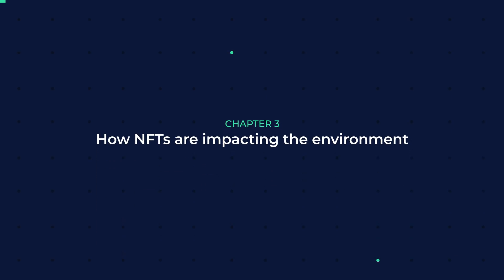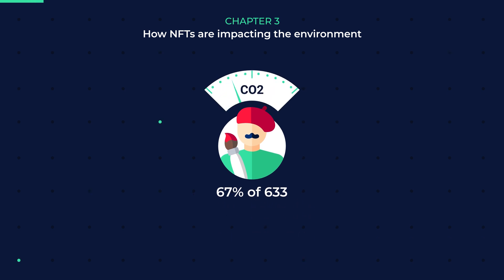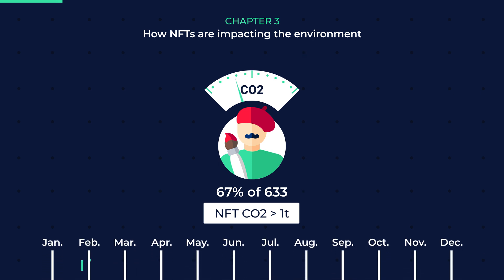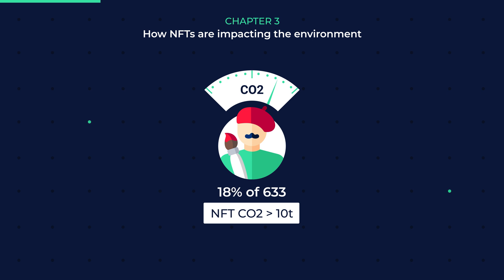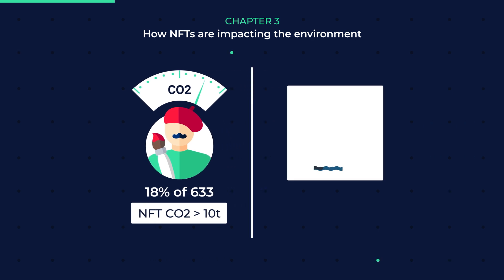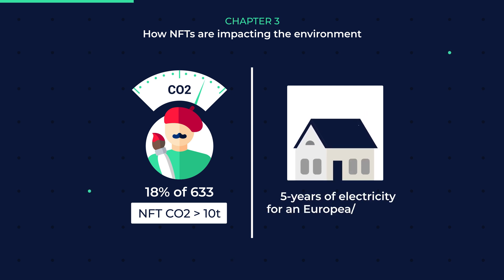Chapter 3: How NFTs Are Impacting the Environment. 67% of the 633 artists on SuperRare have NFTs with a CO2 footprint greater than 1 ton, even though half of the artists have just joined the platform in the previous 6 months. 18% of the artists' NFTs had a carbon footprint larger than 10 tons. To put it in context, this is the equivalent of 12 transatlantic trips, or a 5-year supply of electricity for a European resident.